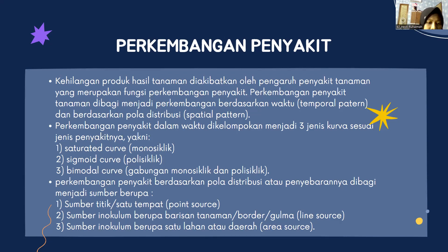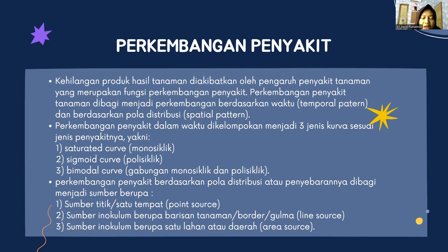Kemudian perkembangan penyakit berdasarkan pola distribusi atau penyebarannya dibagi menjadi beberapa sumber. Pertama, sumber inokulum satu tempat atau point source. Kemudian yang kedua sumber inokulum berupa barisan tanaman, border source, atau line source. Lalu sumber inokulum berupa satu lahan atau satu daerah atau area source.